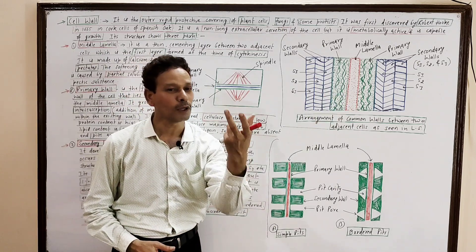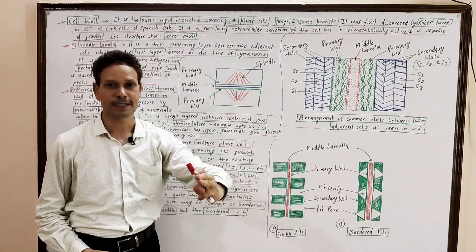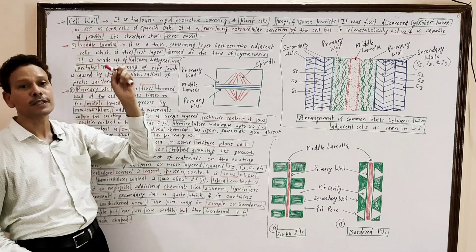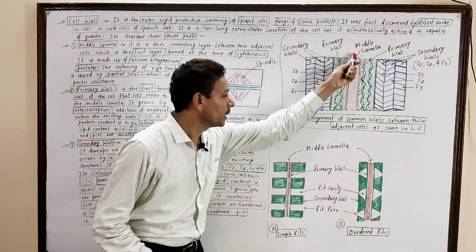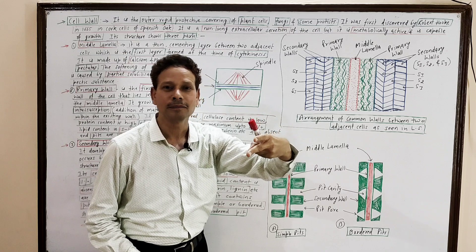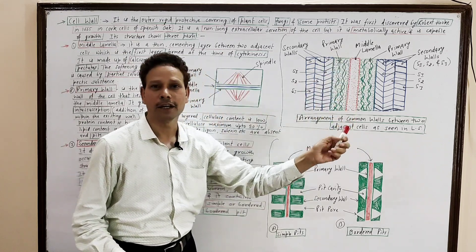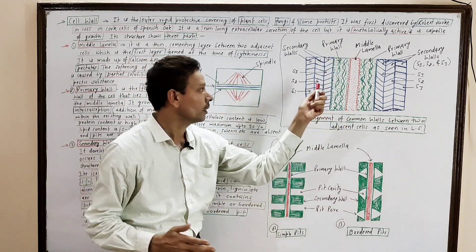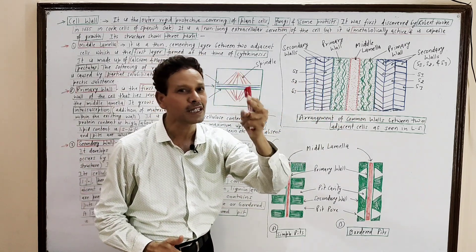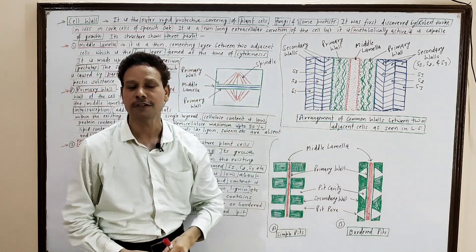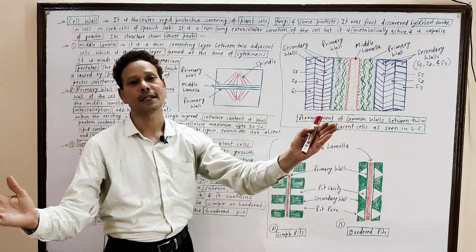The plant cell wall shows three parts. Its first part is the middle lamella. Look here in this diagram — the middle lamella is a thin cementing layer which is present between two adjacent cells. This middle lamella is the first formed layer between two plant cells.